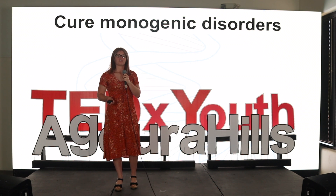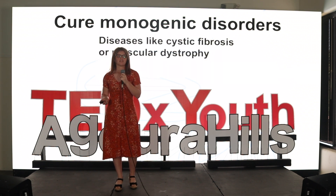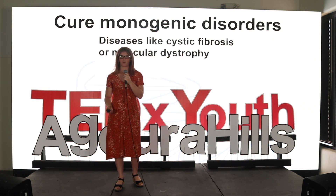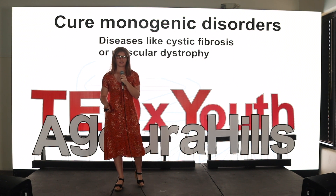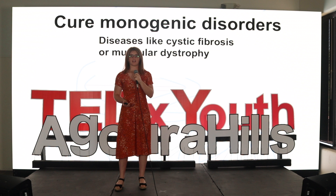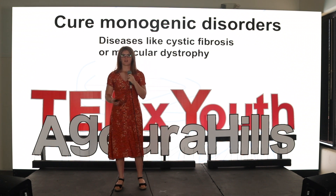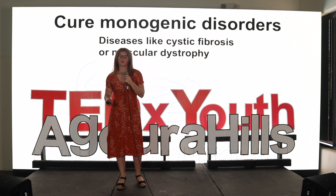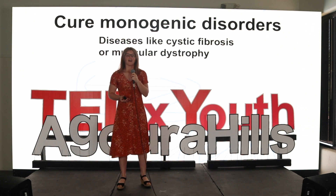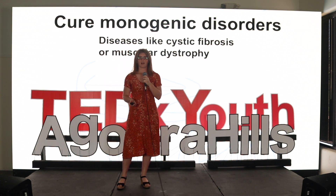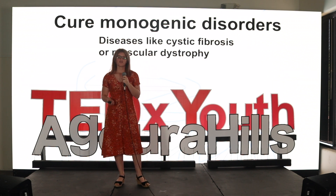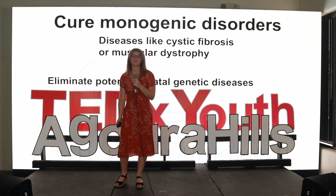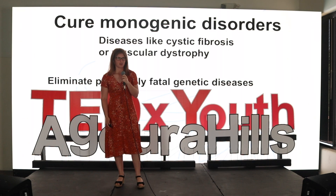One way gene editing could be used in a clinical setting is to cure monogenic disorders for diseases such as cystic fibrosis or muscular dystrophy. While no human successes have been recorded yet, researchers have conducted long-term studies in mouse models. In one study, researchers used viral delivery of CRISPR to mouse cells to cure the protein that causes muscular dystrophy. Muscular dystrophy was essentially cured in these mice because the non-mutated protein was expressed a year after treatment. Procedures such as this could help eliminate potentially fatal genetic diseases that an offspring could inherit.